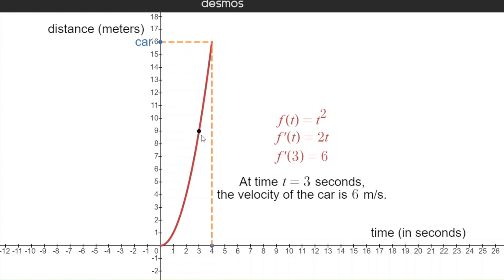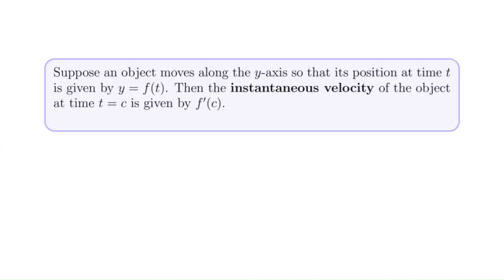So notice the derivative gave us the instantaneous velocity. Suppose an object moves along the y-axis so that its position at time t is given by y equals f of t. Then the instantaneous velocity of the object at time t equals c is given by f prime of c, the derivative of f at c. I should mention that the book and MyMathLab sometimes uses x for time, so f of x where x is the time variable in seconds or hours.